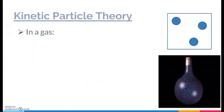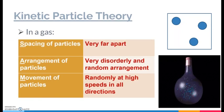In the gas itself, the particles are very, very far apart. In terms of the arrangement, it's very disorderly — a random arrangement. In terms of movement, the particles are moving randomly at very high speeds in all different directions. In drawing the structure of a gaseous state, we often simply draw three particles to represent how far apart they are from one another. Of course, these particles must be in a random arrangement.